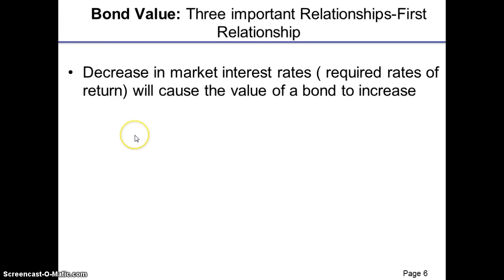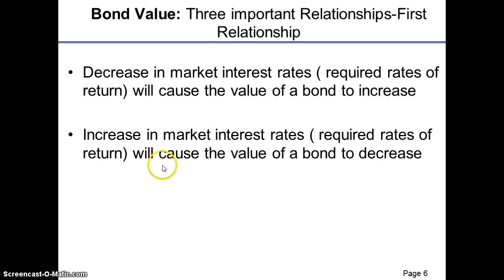This brings us to the first relationship between bond price and market interest rate: a decrease in market interest rates will cause the value of the bond to increase, and vice versa — an increase in market interest rate will cause the value or price of the bond to decrease. Whenever there is an increase or decrease in the market interest rate, the value of the bond also increases or decreases accordingly.